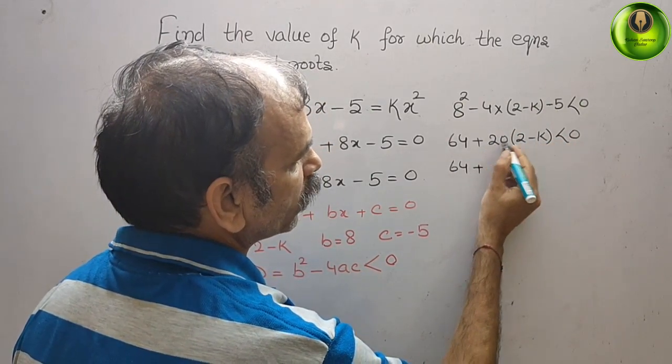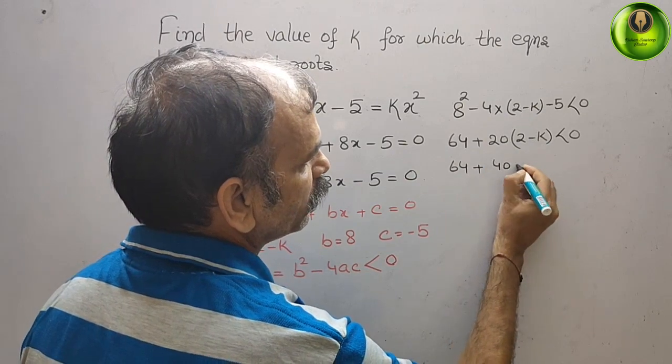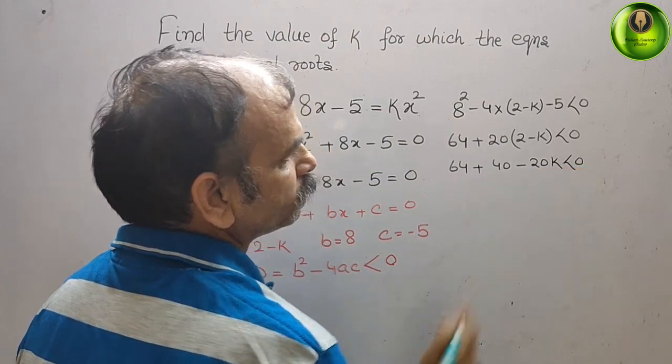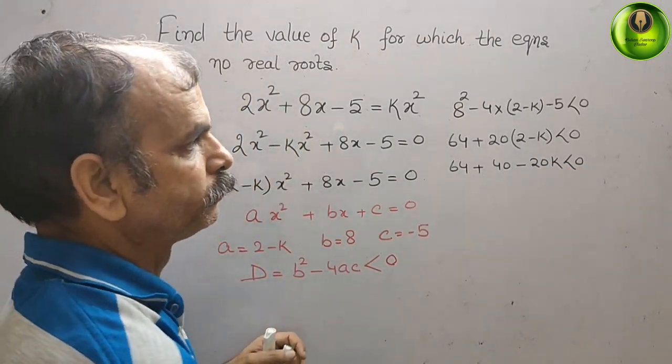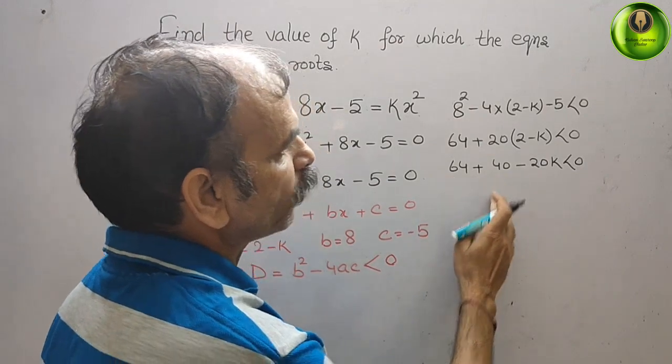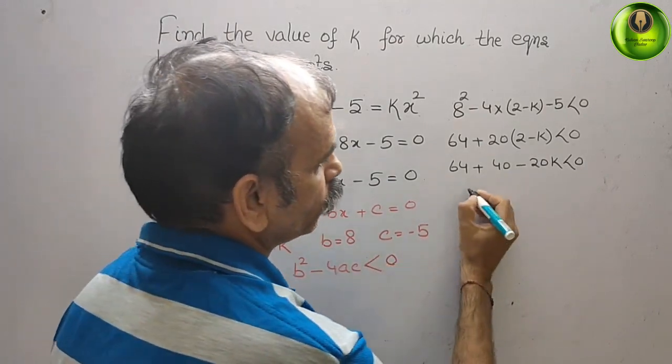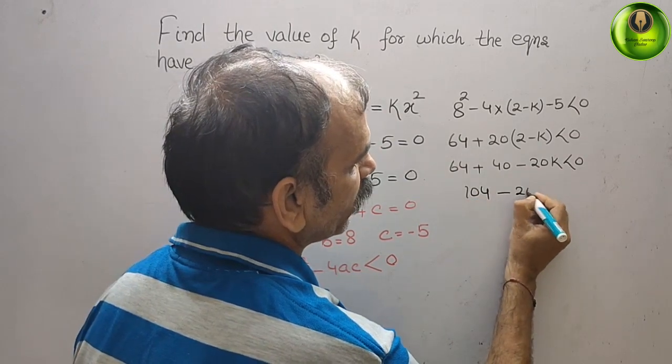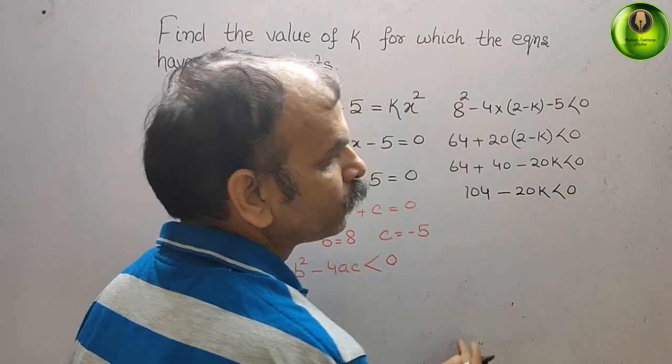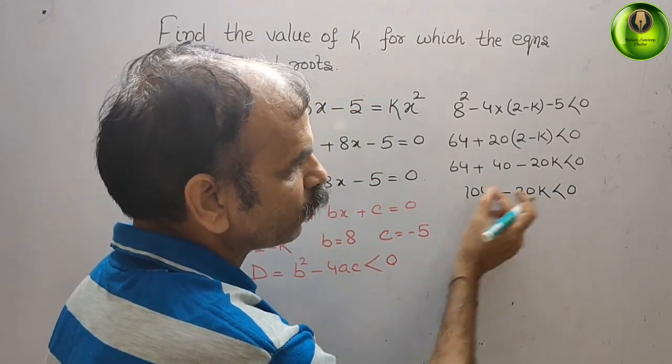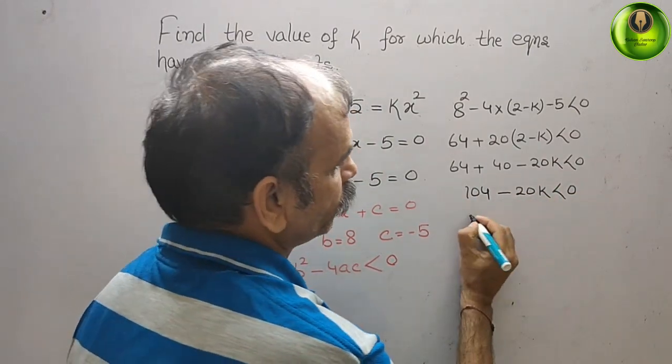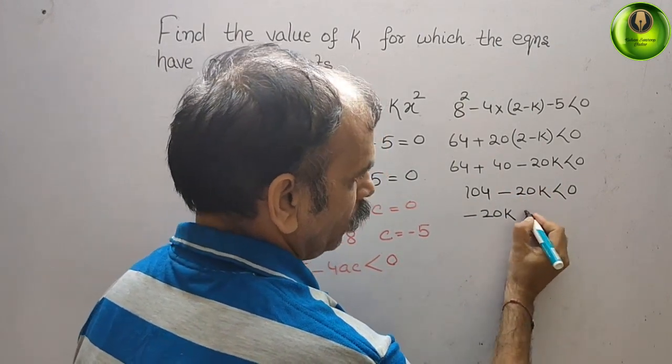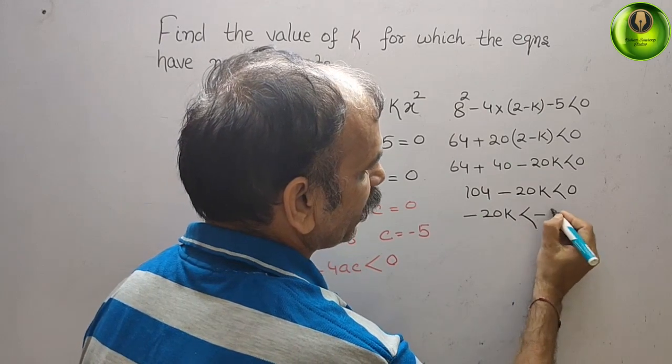64 plus 20 into 2 is 40 minus 20k is less than 0. Now 64 plus 40 is 104, so here you will get 104 minus 20k is less than 0. Bring this 104 to your right side, it will become minus 104. Now it will be minus 20k is less than minus 104.